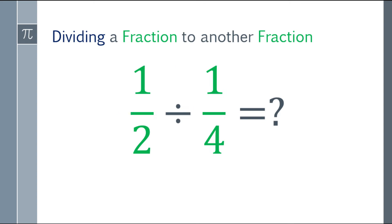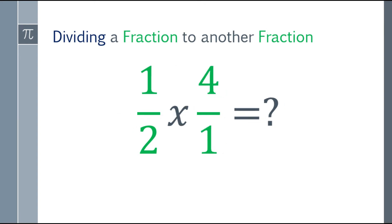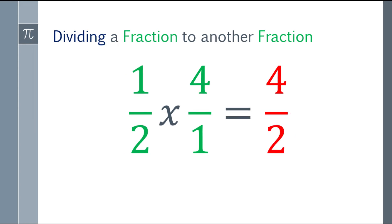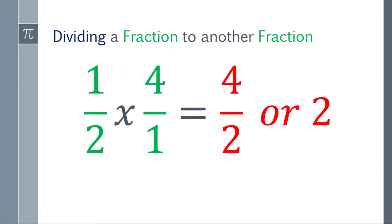So going back to the problem: one-half divide by one-fourth. Flip one-fourth, so that will be four over one. And change the sign from division to multiplication, so that will be one-half times four over one. Multiply the numerators: one times four is four. And the denominators: two times one is equal to two. So the final answer will be four-halves, and you can still reduce it to two, since four divided by two is two.